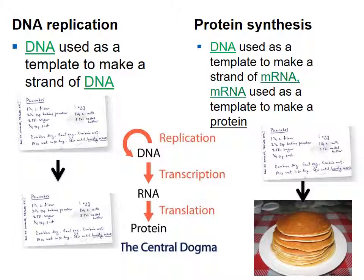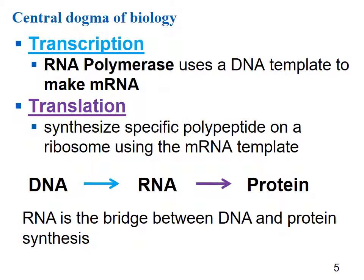This describes the central dogma of biology: going from DNA to RNA to protein. It's called the central dogma, so it's a pretty big deal. Transcription is when RNA polymerase uses a DNA template to make mRNA. Translation is when that mRNA is used to synthesize a specific polypeptide on a ribosome. To go from DNA to RNA is transcription; from RNA to protein is translation. RNA is the bridge between the instructions on the DNA and the new protein produced.